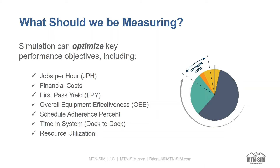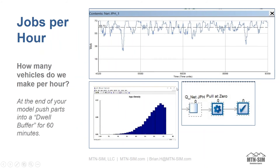Continuous improvement starts with the concept of: if you can measure it, you can manage it. Most of our plants will have systems in place that collect a lot of real-time shop floor metrics — our overall working, waiting, blocked, and downtime. We take this data and come up with a set of performance metrics that could include quality, scrap, and availability. Once we have these metrics in place, we can come up with improvement plans that lead us into continuous improvement.